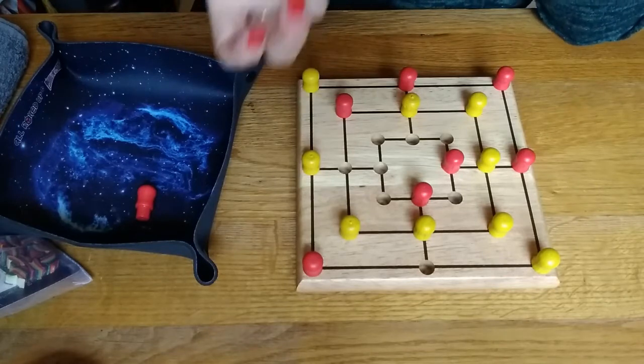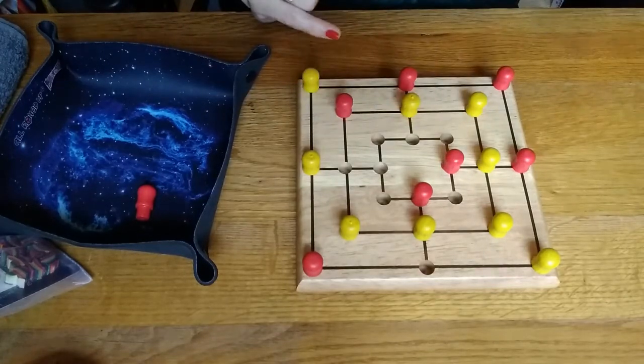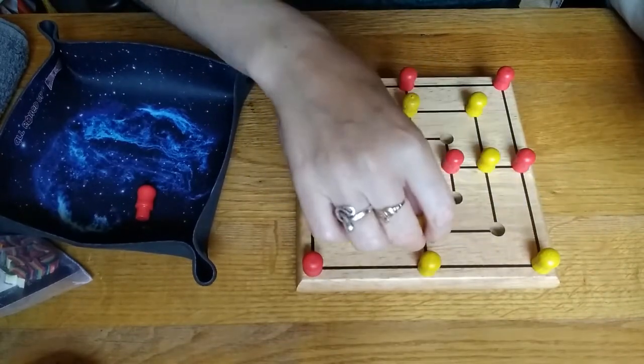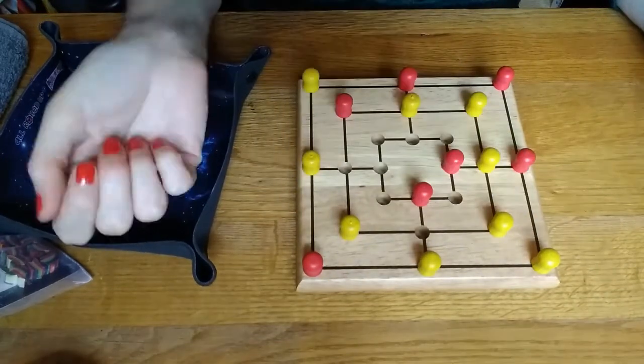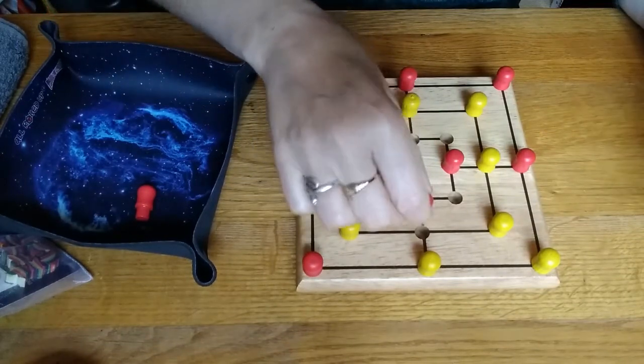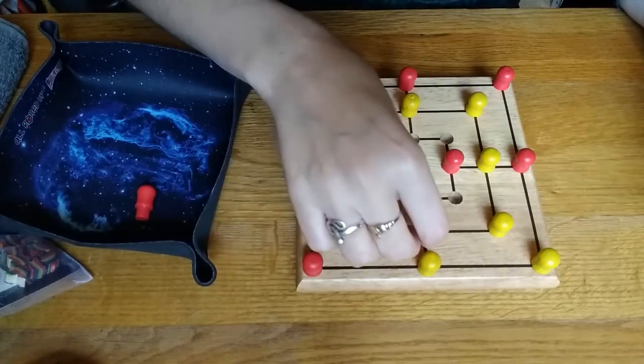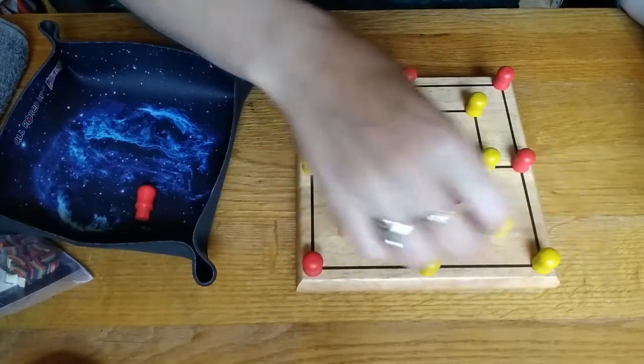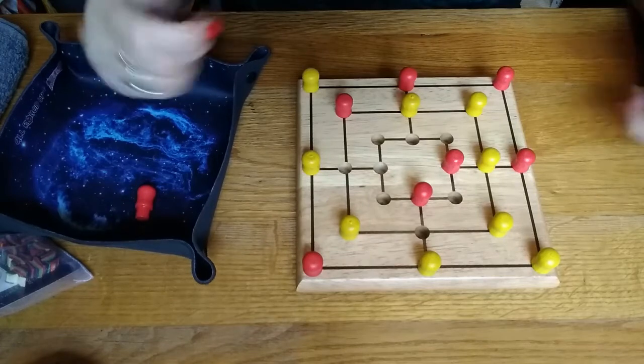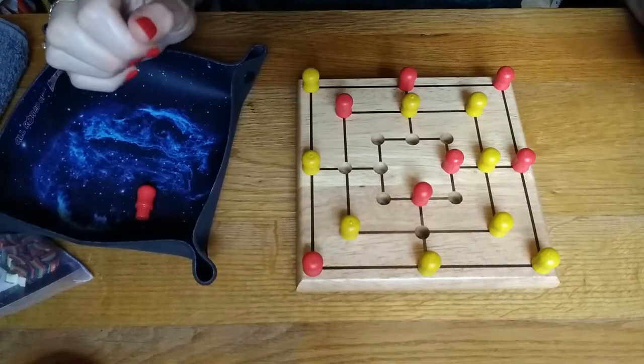And it also makes the setup more important. Because obviously, you need to be making sure that when you set up, you can see that yellow is already set to make some of those moves really easily. Whereas red is going to have much more of a difficult time getting themselves into a position, they would need these to be empty to make that mill. So they're in a more difficult position because of the setup. So the setup is really, really important.